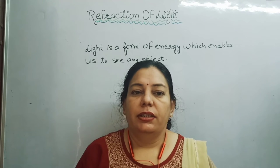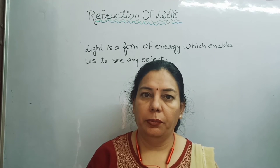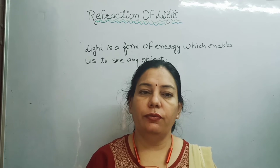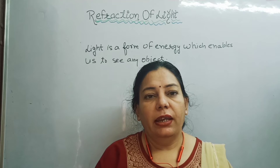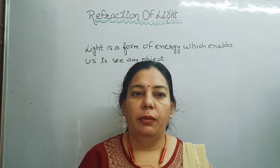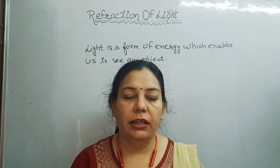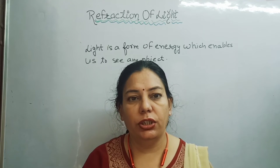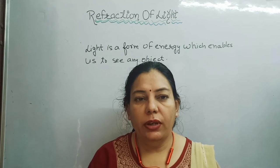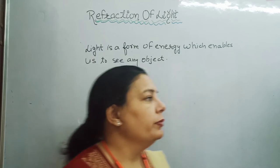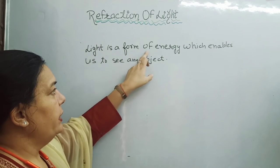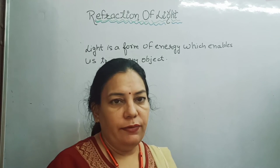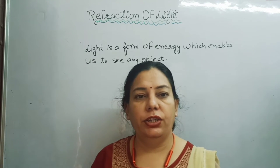Hello students. Today's topic is light. The ultimate source of light is solar energy, which means that light is a form of energy. We are able to see anything with the help of light — if we stand in a dark room, we are not able to see anything. So light is essential to see any object. Light is a form of energy which enables us to see any object.